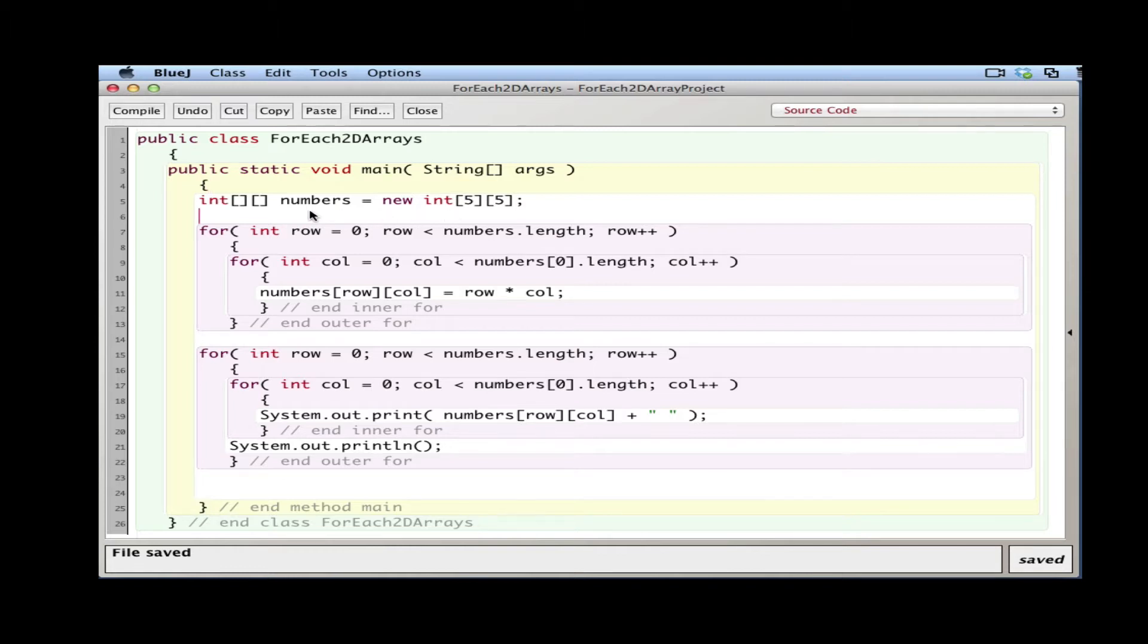In this program here, I have a 2D array of integers, it's 5 by 5. With regular for loops, I have two of them. The first one is going to populate the array with products of rows and columns, like a multiplication table, and the second set of nested for loops are going to print it out.